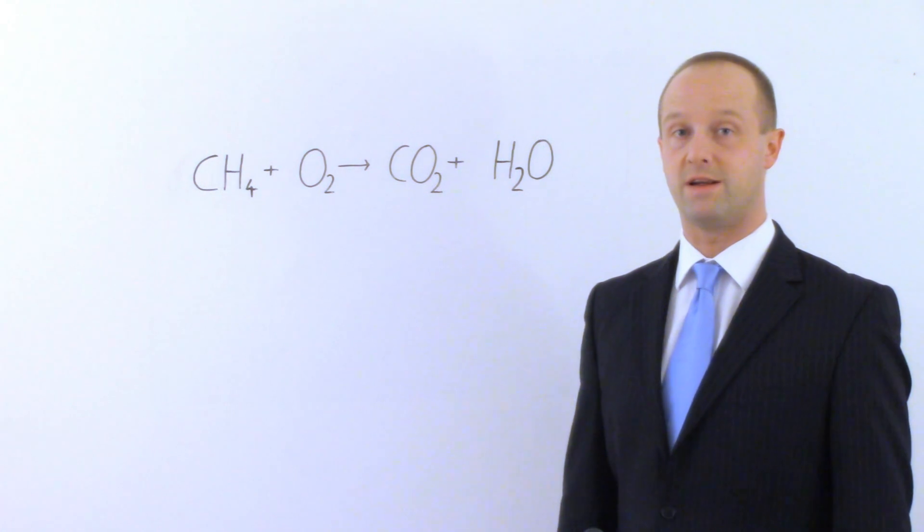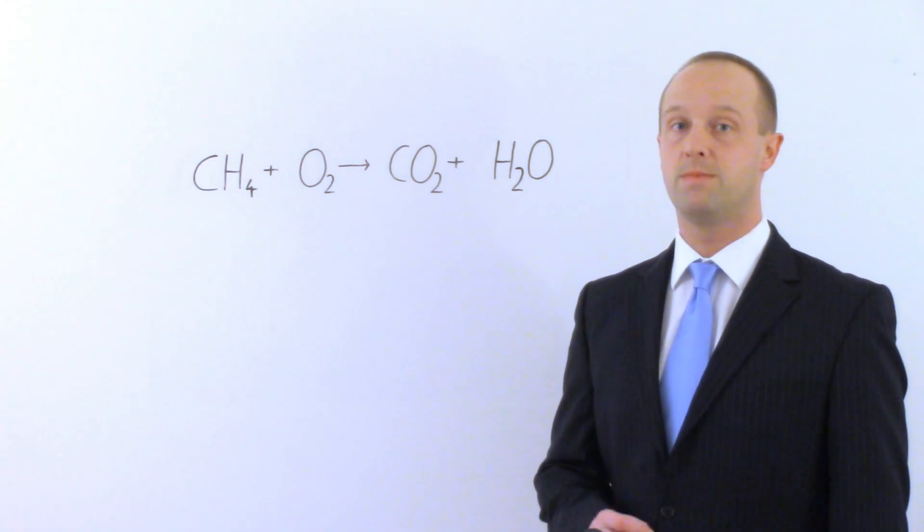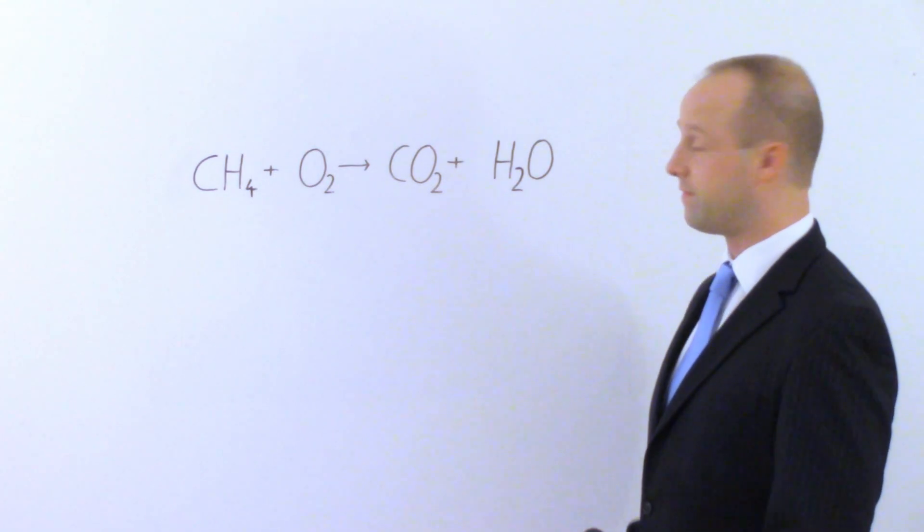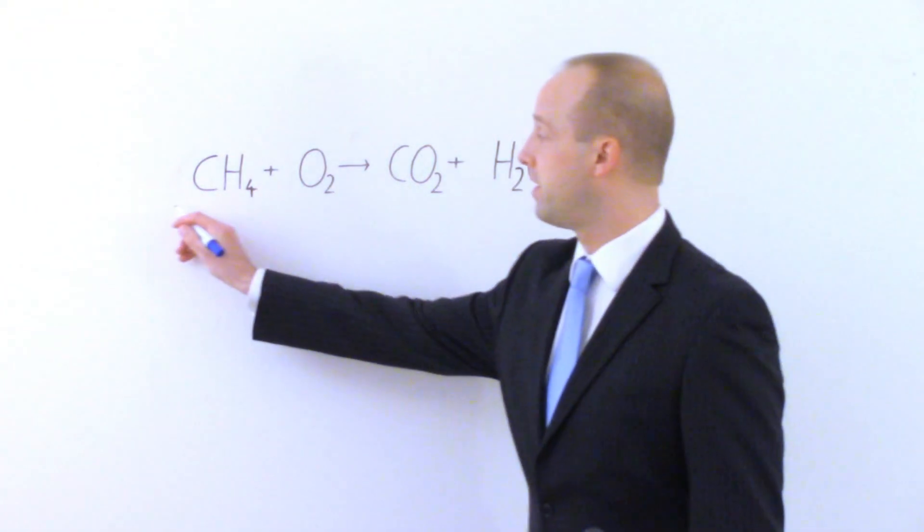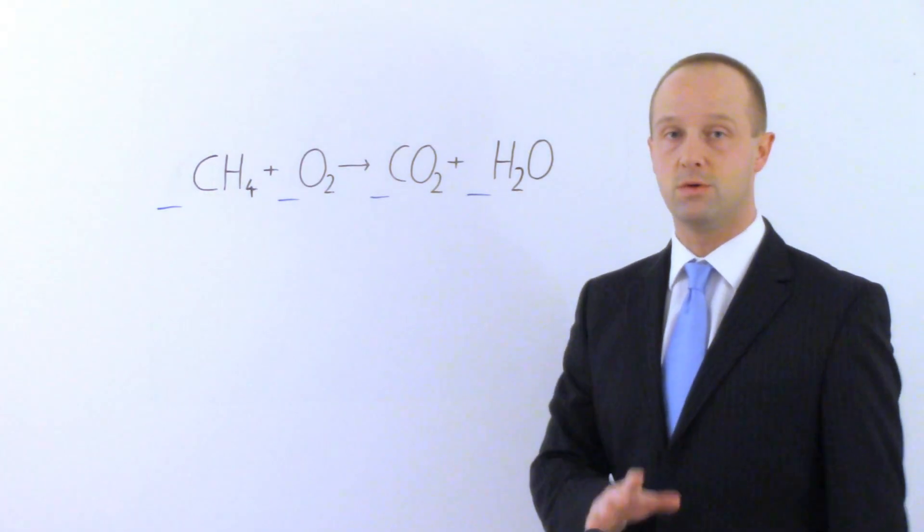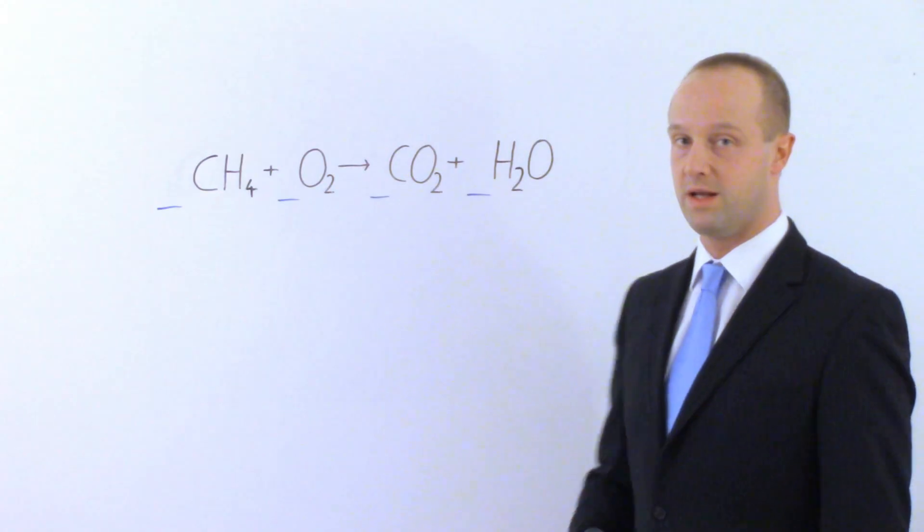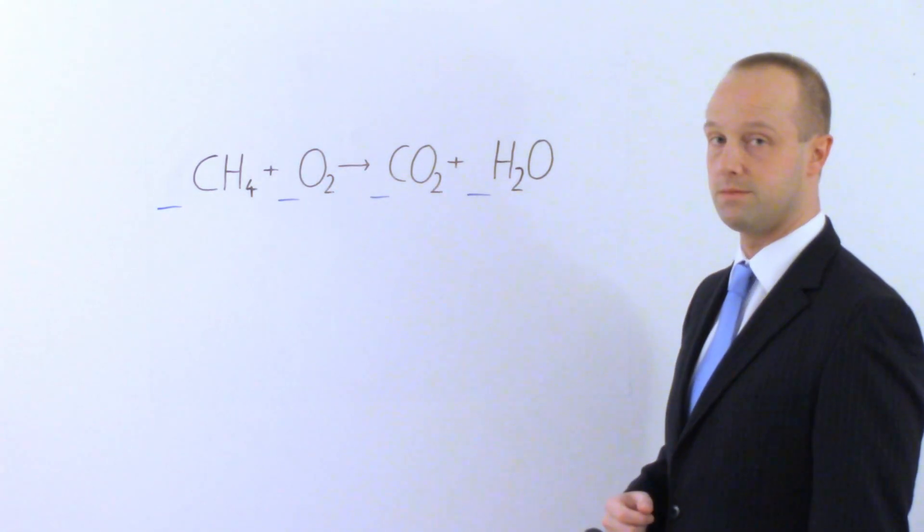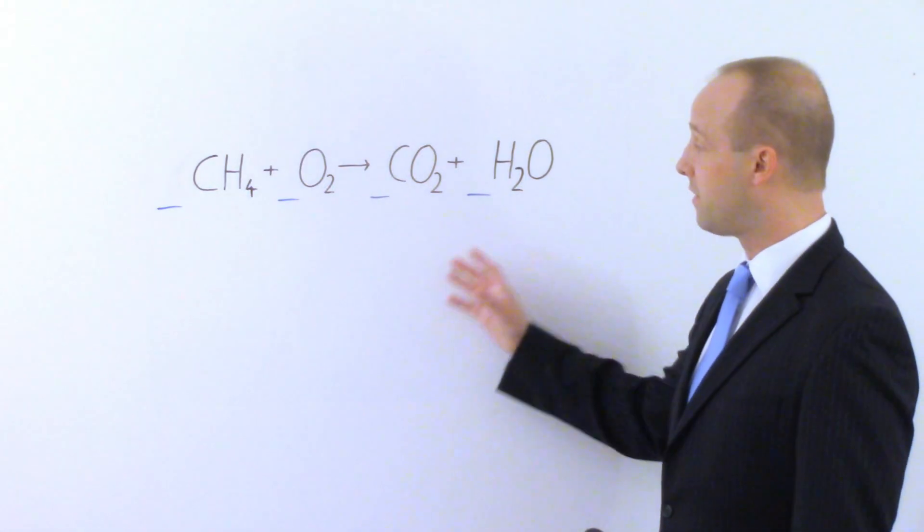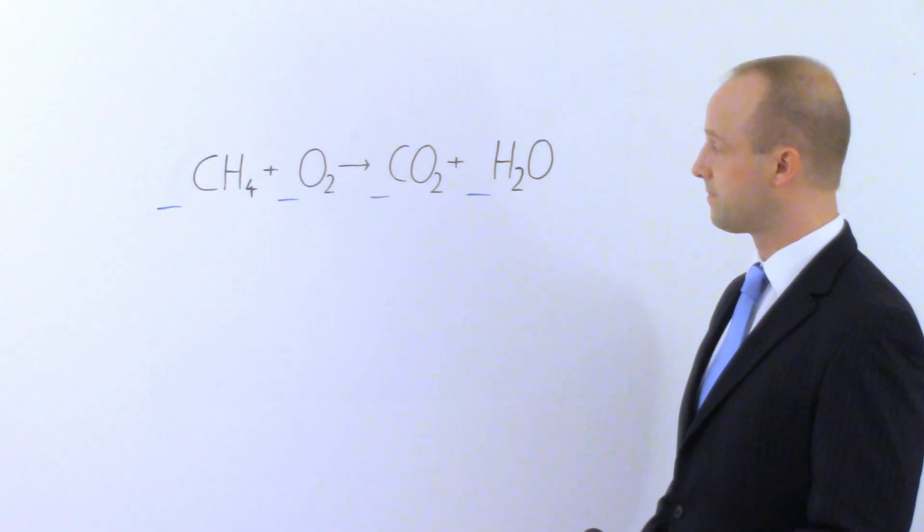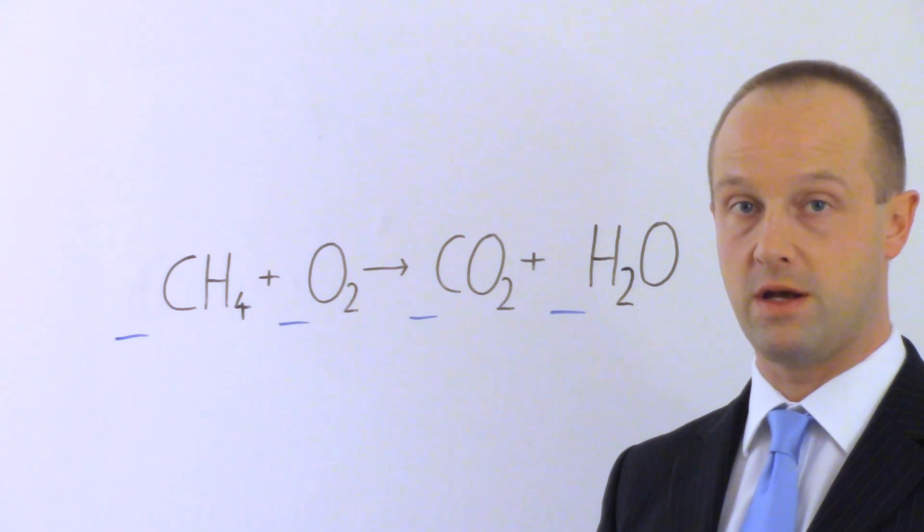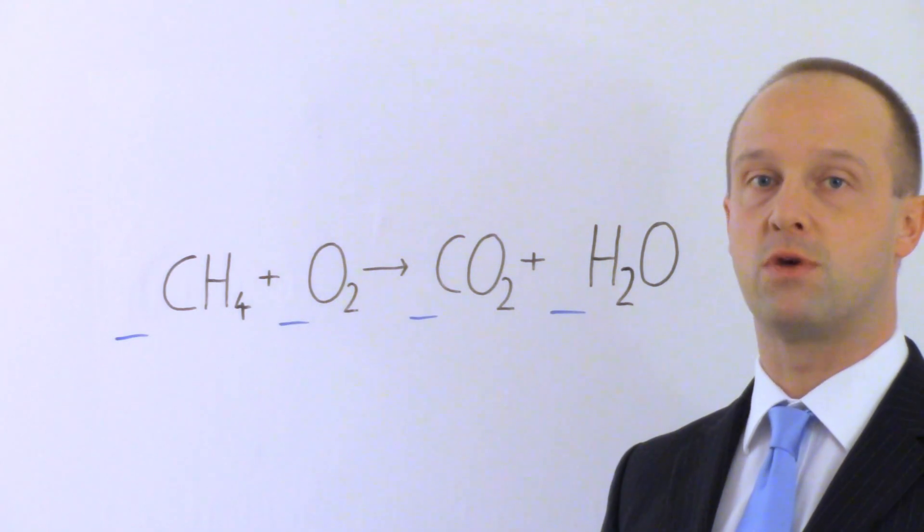The key to balancing an equation like this is adding numbers to it. But you can only put numbers in specific places. Those places are immediately before each one of these compounds. So we could put a number here, we could put a number here, we could put a number here, and we could put a number there. Those are the only places where you can put the numbers. It's got to be in front of one of these compounds. Now you're not necessarily going to need to put a number in front of all of them, but those are the only four places where we could put numbers. So now we've counted up our atoms, we've seen that the equation's unbalanced, and we know where we can add numbers to the equation. It's a little bit of trial and error from this point on.